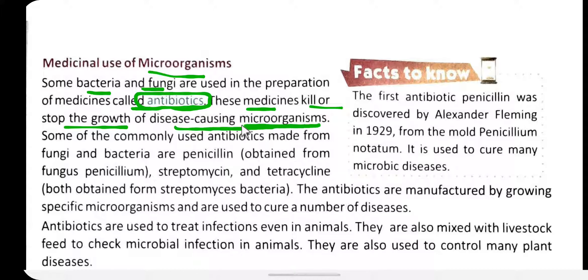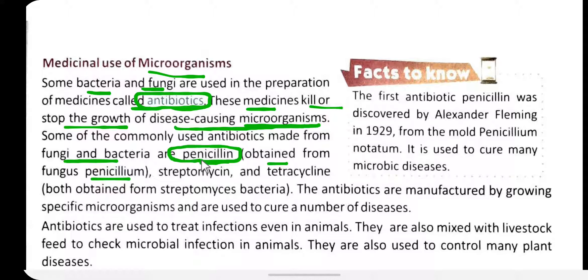Some commonly used antibiotics made from fungi and bacteria include penicillin, which is obtained from the fungus Penicillium. Penicillin is one of the most commonly used antibiotics, and it is obtained from the fungus Penicillium.